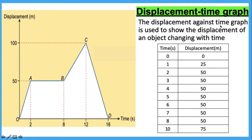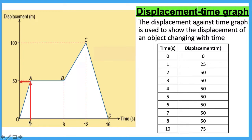The Displacement Against Times Graph is used to show the displacement of an object changing with time. By referring to the graph of displacement against time, you are able to determine the displacement of an object at a certain time. For example, this object will be at a displacement of 25 meters in 1 second. In 2 seconds, the displacement will be 50 meters from its starting point. At 3 seconds, the displacement is still 50 meters.